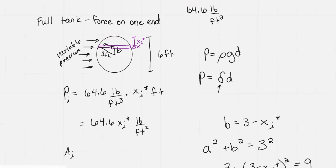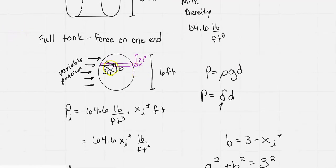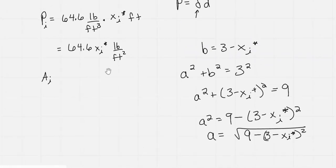Looking at my picture, I need the entire width of that rectangle. I just found out half of it. So I'm going to call that 2A. I really care about 2A. So 2A would be 2 times the square root of 9 minus (3 minus x sub i star) squared.